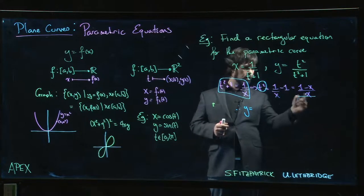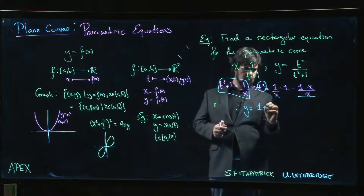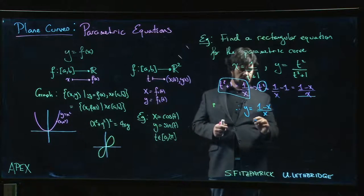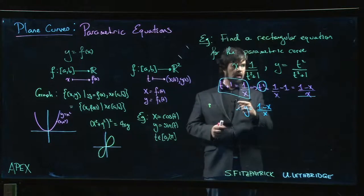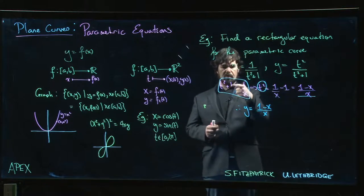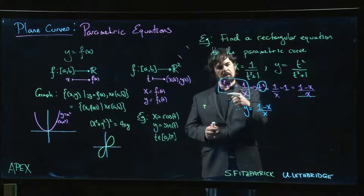Divided by t squared plus 1. Here's t squared plus 1, so divided by t squared plus 1 is multiplying by 1 over t squared plus 1. We take the reciprocal, we're multiplying by x over 1.